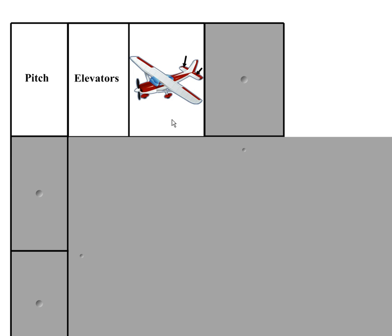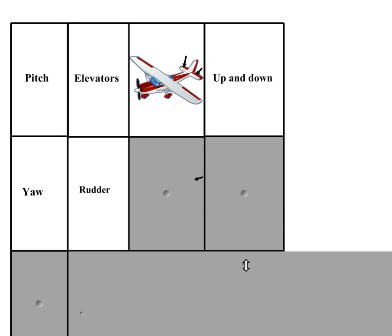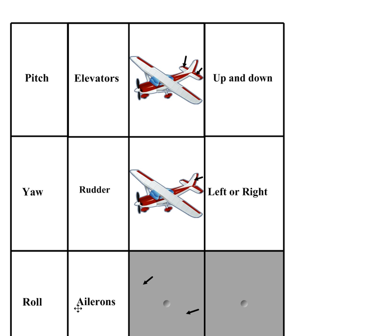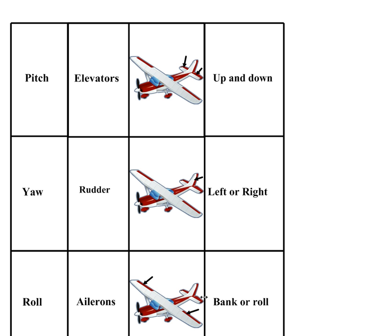Let's do a quick review. First, we have pitch — pitch is controlled by the elevators, right there — and it's an up and down movement. Next we have yaw — yaw is controlled by the rudder, back here — and that is a left or right movement. Last is roll — roll is controlled by the ailerons, right there — and that's where you have a bank, or sometimes you'll hear the word roll. So: pitch, yaw, and roll.